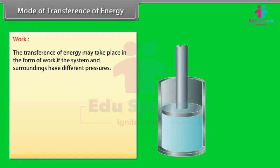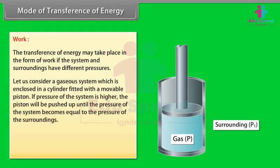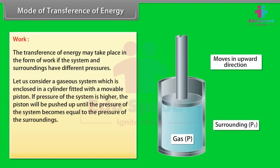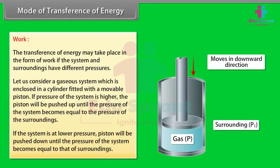The transference of energy may take place in the form of work if the system and surroundings have different pressures. Consider a gaseous system enclosed in a cylinder fitted with a movable piston. If the pressure of the system is higher, the piston will be pushed up until the pressure of the system becomes equal to the pressure of the surroundings. If the system is at lower pressure, the piston will be pushed down until the pressure of the system becomes equal to that of the surroundings.